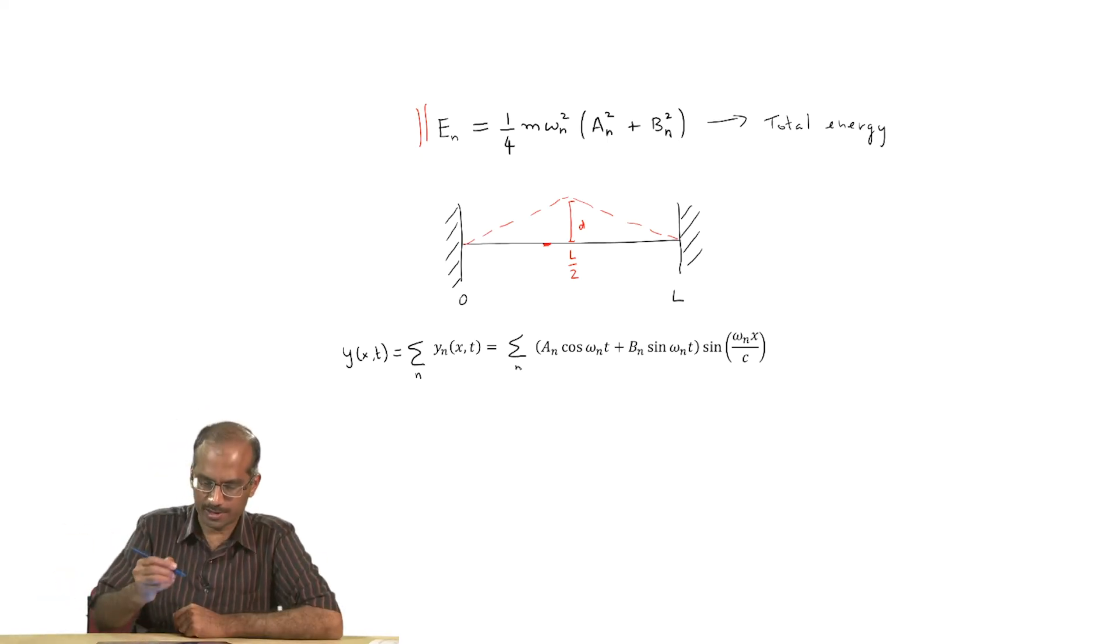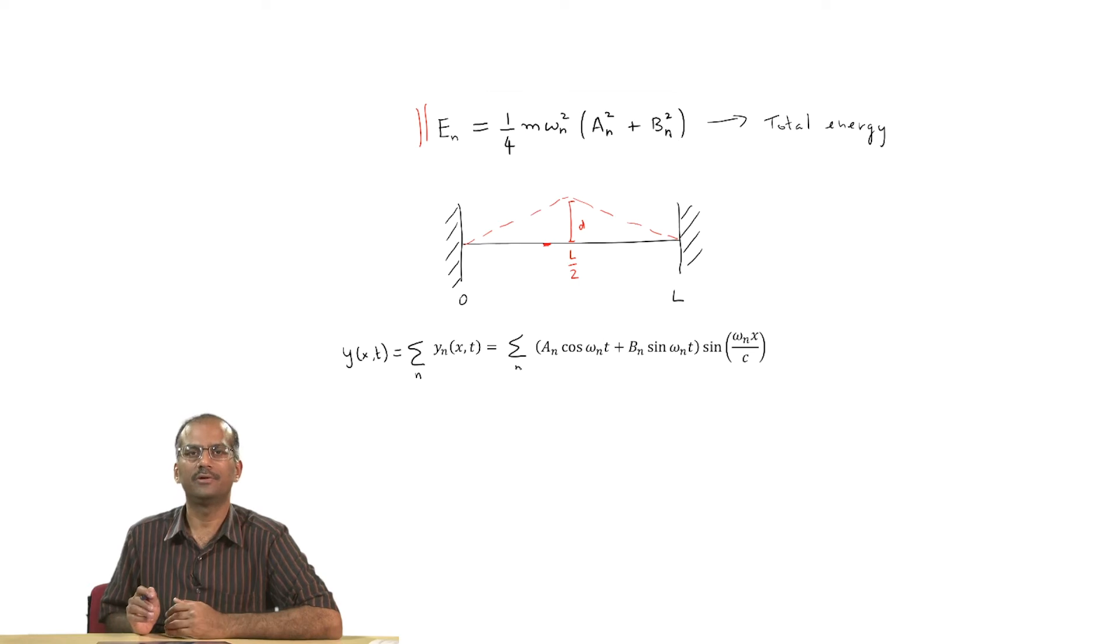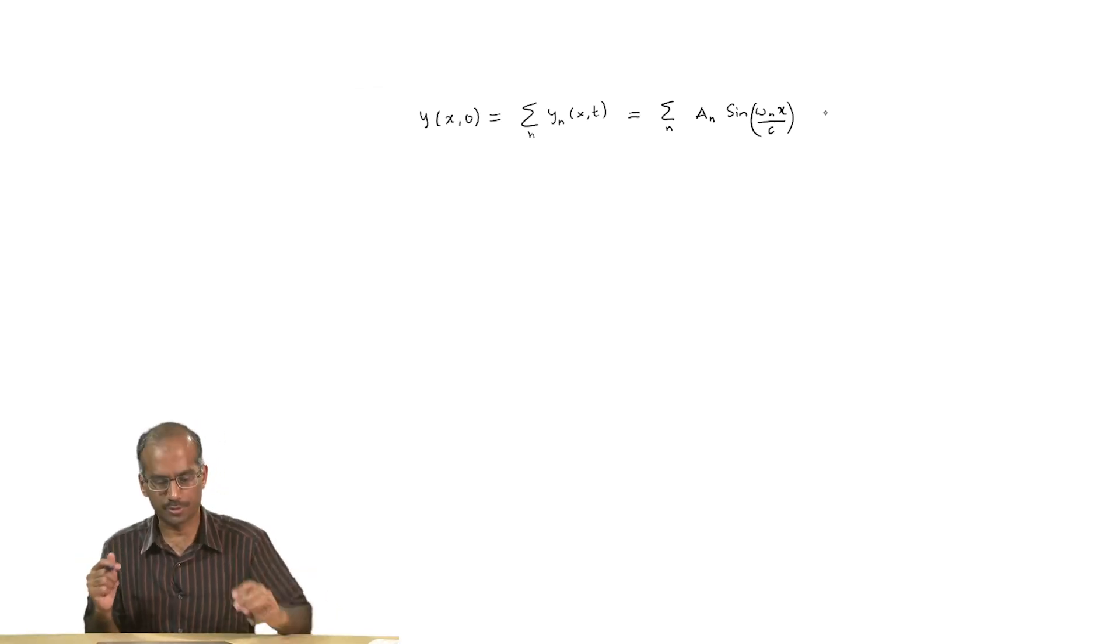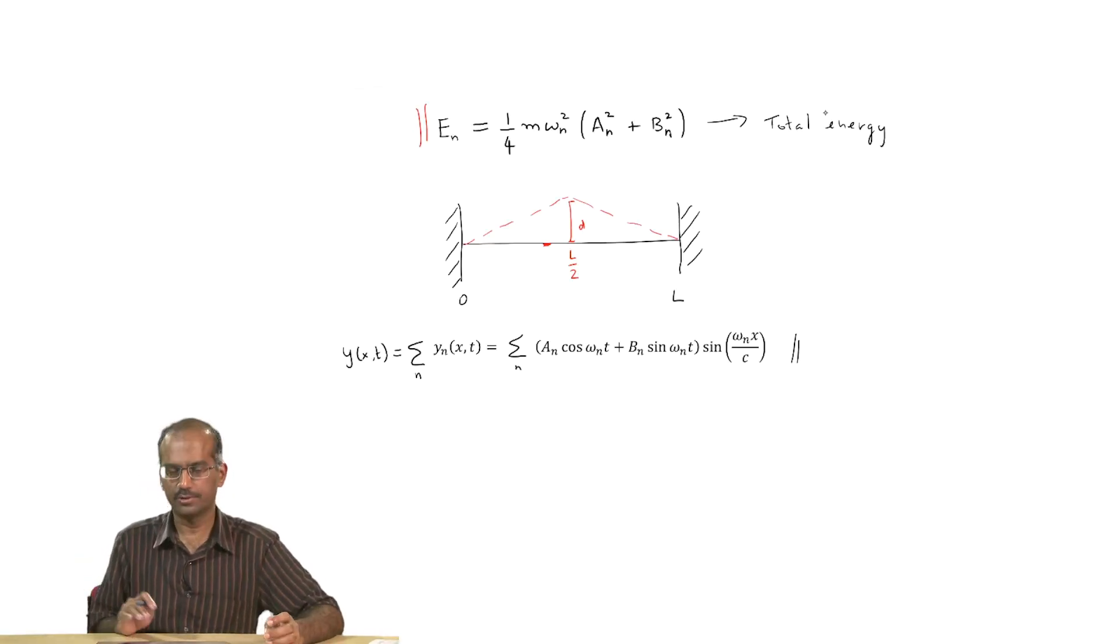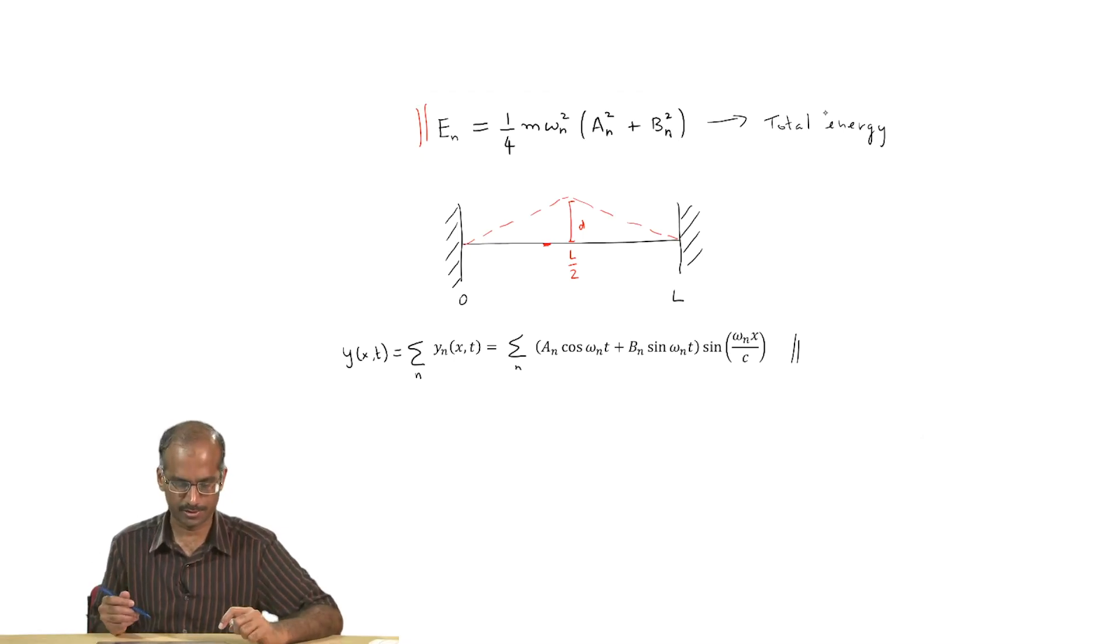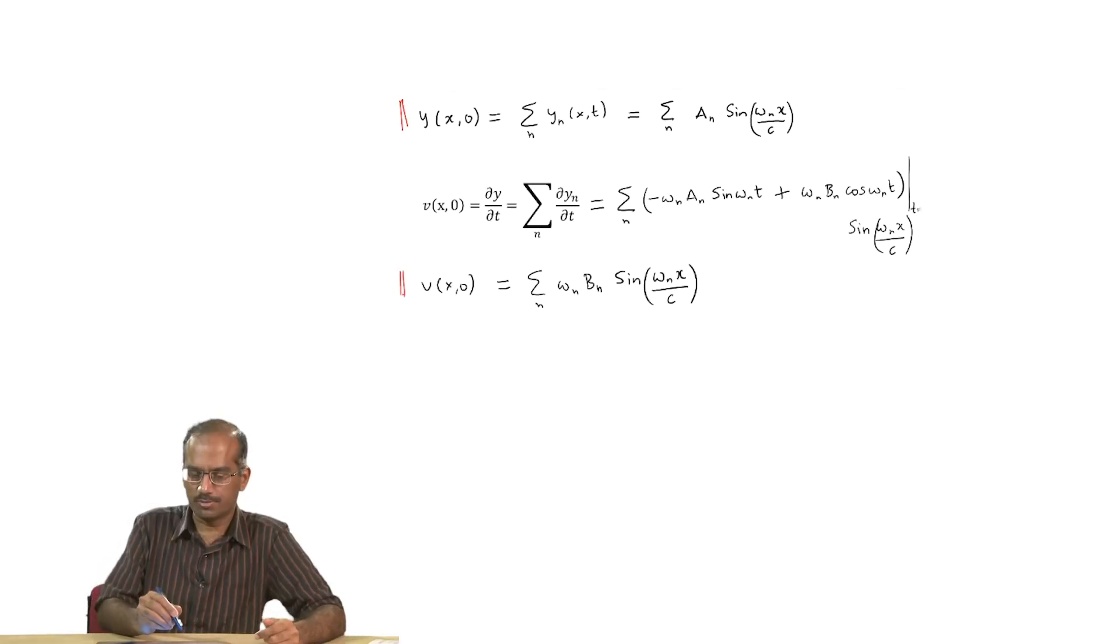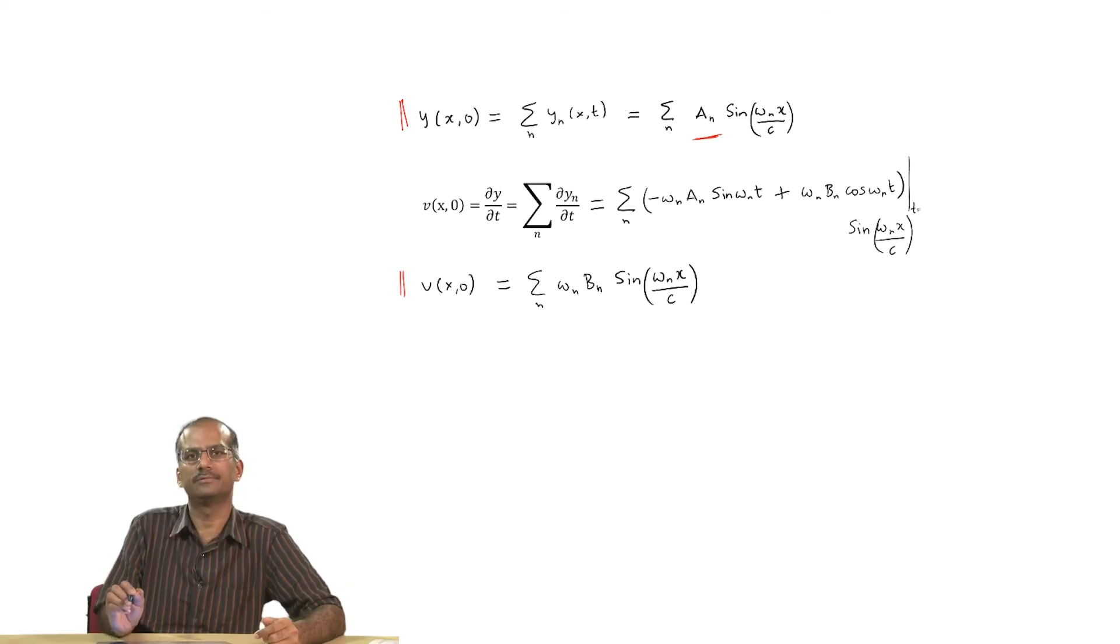My net displacement which is a function of position and time, which I will call as y without any subscript, will be a summation over all the normal modes. This y as a function of x and t tells me the displacement as a function of position and time for some arbitrary displacement that I have done. Now I want to specialize to the case when t equals 0, the initial displacement. All we have done is substitute t equals 0 in this last equation. Next I want to also get the particle velocity at t equals 0.